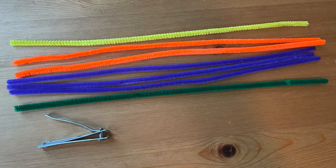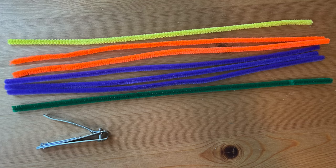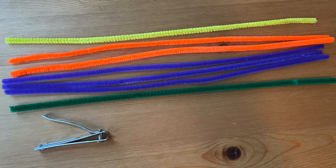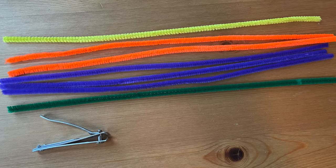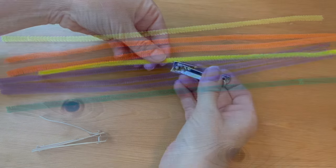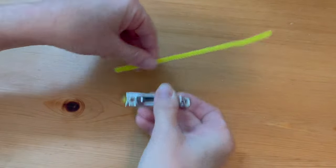For each flower you will need one yellow and one green pipe cleaner, three of one color and two of a contrasting color, and fingernail clippers. Cut the yellow pipe cleaner in half with the fingernail clippers.